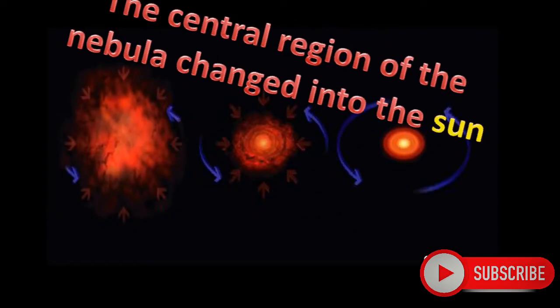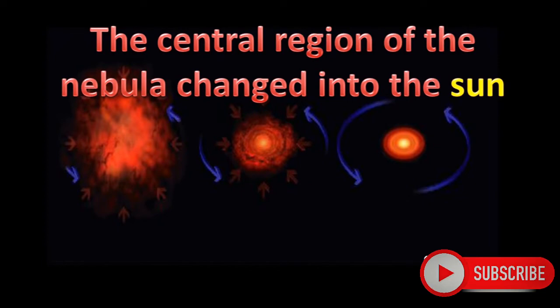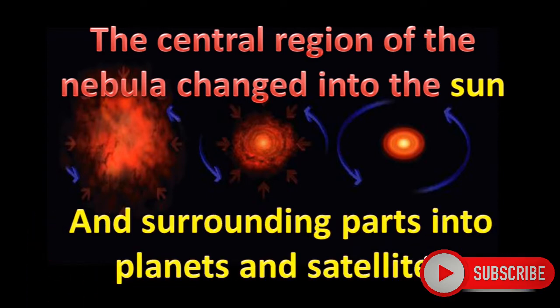The central region of the nebula changed into the sun, and surrounding parts into planets and satellites.